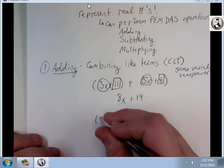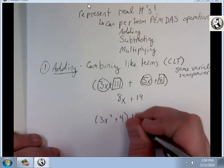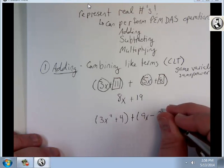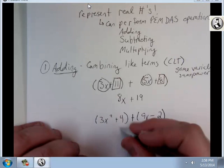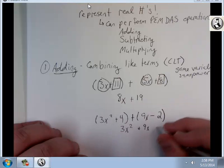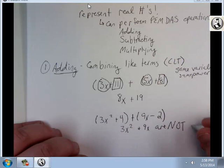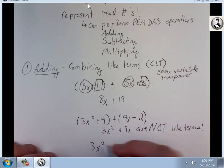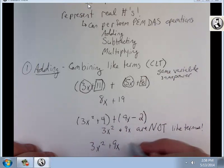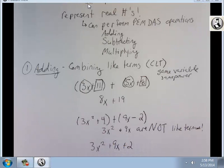And what about something like this? 3x squared plus 4 plus 9x minus 2. 3x squared and 9x might have the same variable, but it's not to the same power. Therefore, they are not like terms. So I have to keep them separate. So I have 3x squared plus 9x and 4 minus 2, which is plus 2. And again, I'm done.